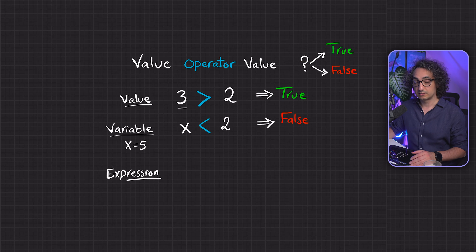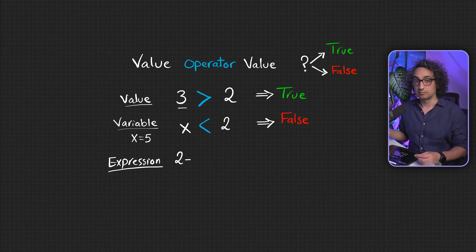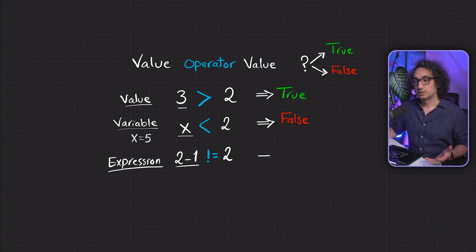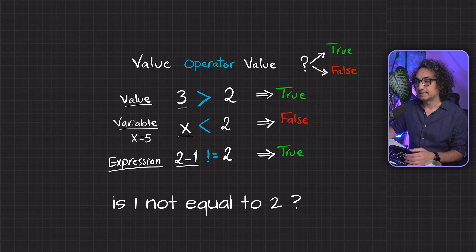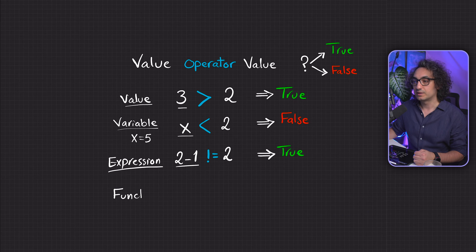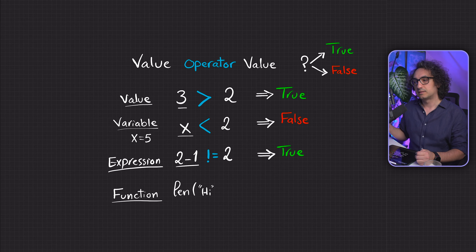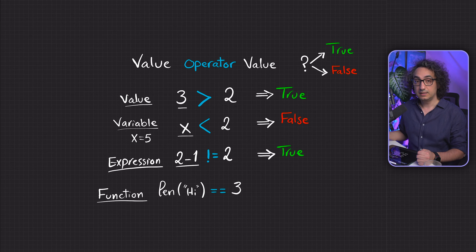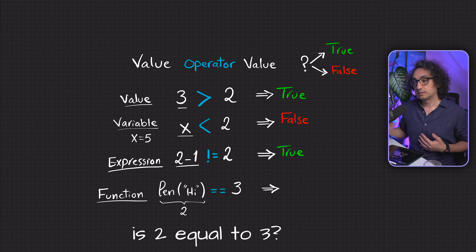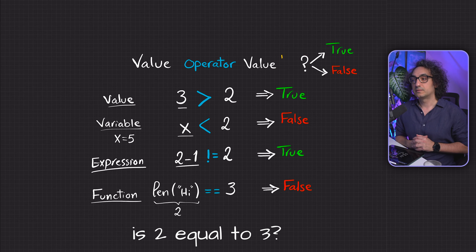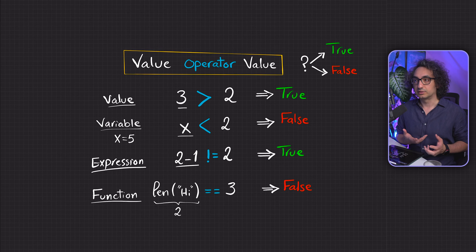We can also use expressions. For example, two minus one is an expression, and you can compare it to the value two using not equal — asking 'is two minus one not equal to two?' That is true, because two minus one is one, and one is not equal to two. You can also use built-in functions like length: 'is the length of "hi" equal to three?' Python executes the function first, gets two, then checks if two equals three — the answer is false.